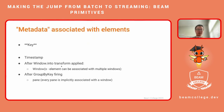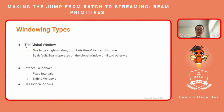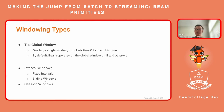There are three main types of windows in Beam, though you can define custom windows. The first is global window, which is the default. If you do not use the window into PTransform, all elements are in global window — it's a large single window from Unix time zero to max Unix time, and Beam operates on the global window until told otherwise. The second is interval windows, which come in two types: fixed interval window and sliding window.